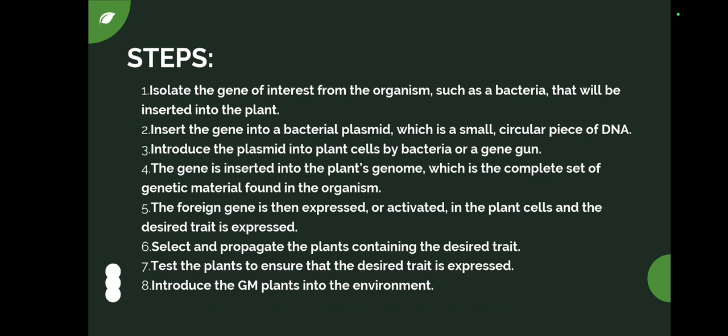The step-by-step process of inserting a gene: first, isolate the gene of interest from an organism such as bacteria or fungi. Insert the gene into a bacterial plasmid, which is a small circular piece of DNA. Then introduce the plasmid into the plant cell via bacteria or a gene gun. The gene is inserted into the plant genome, then expressed and activated in the plant cell. Finally, select and propagate the plant containing the desired trait, and test the plant to ensure the desired trait is expressed.